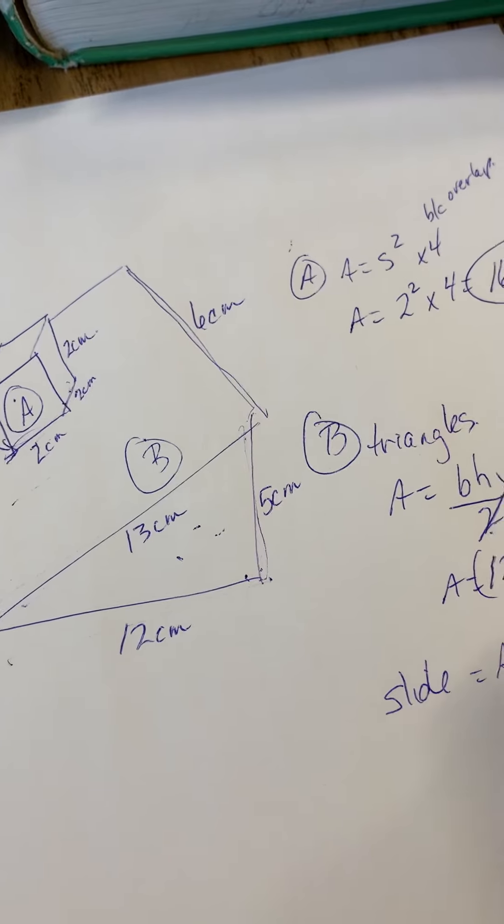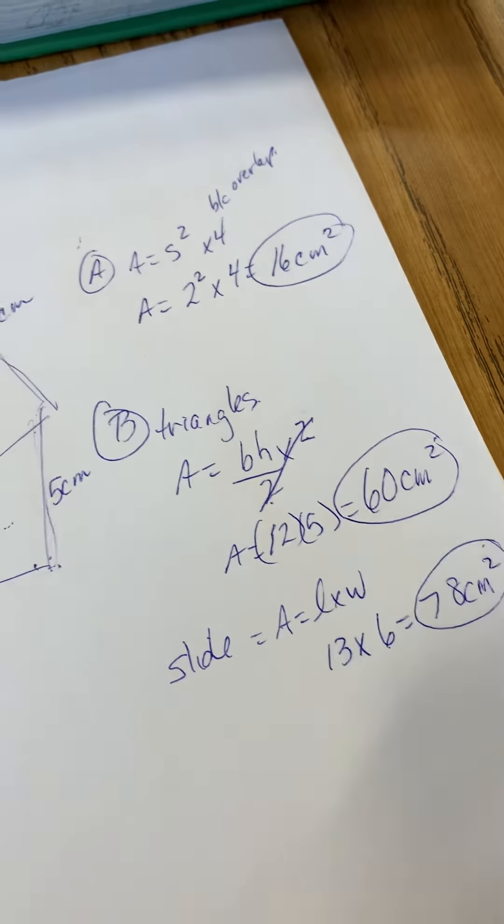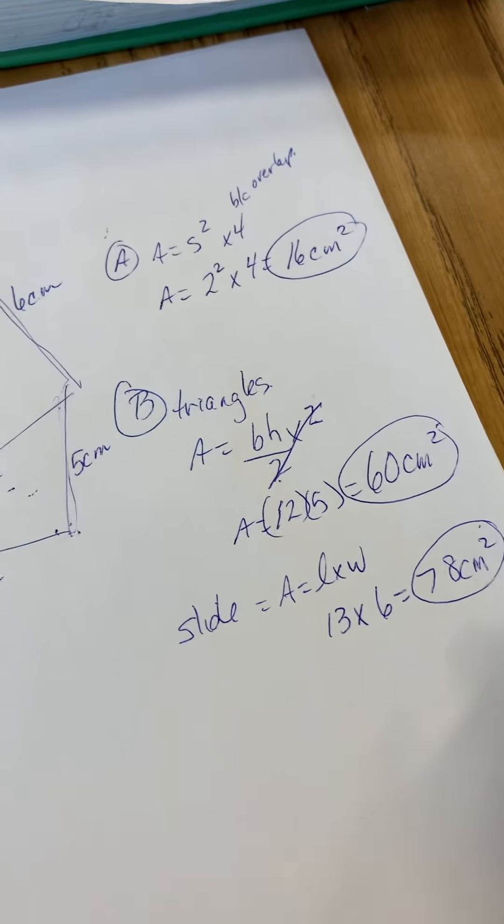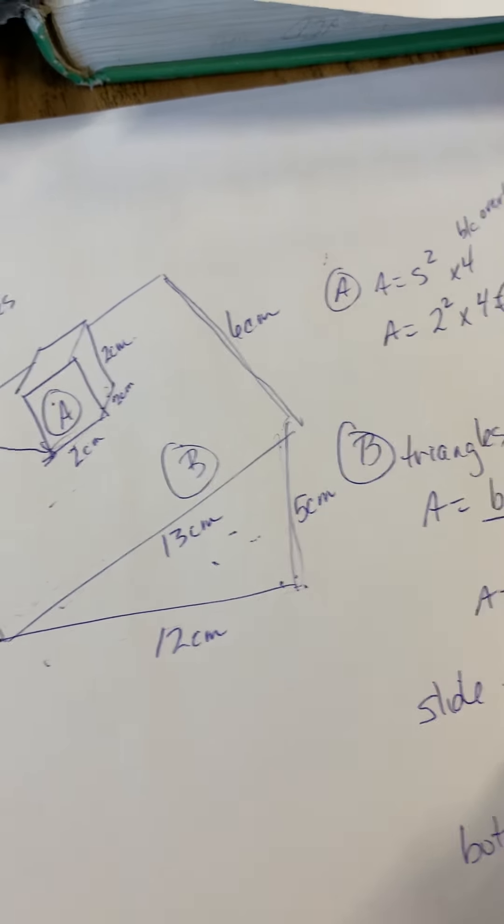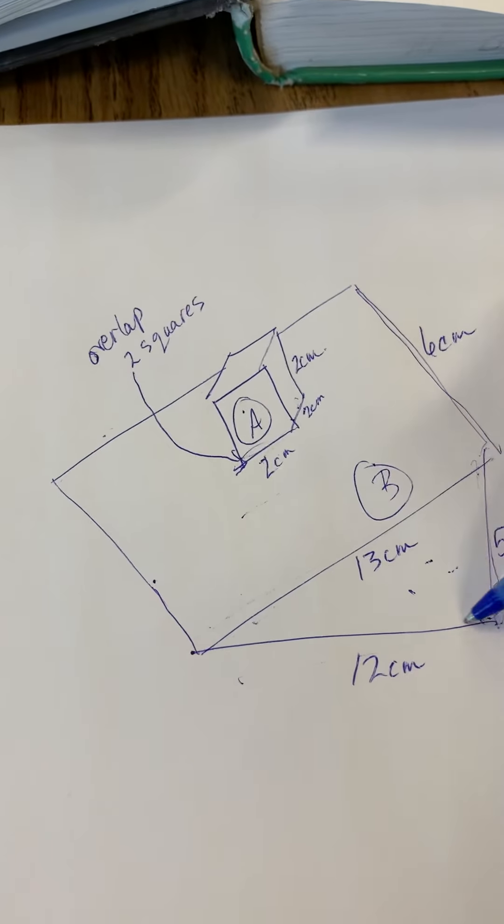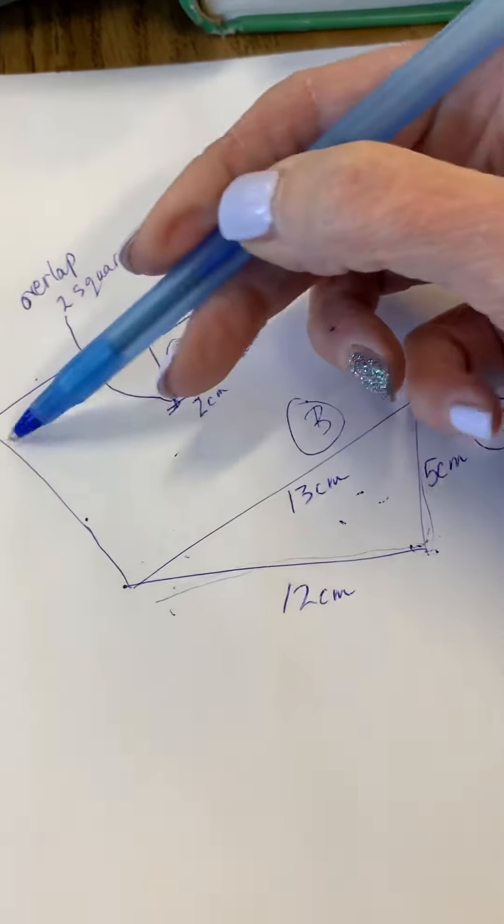13 times 6 is 78 centimeters squared. I'm going to circle that so I remember that's one of the things that I'm going to add together. Okay, now I'm going to do the bottom. I'm going to think, here's the bottom. It is 12, and I'm not going to use 5. 5 is the height. 12 and the thickness of that bottom rectangle is 6.